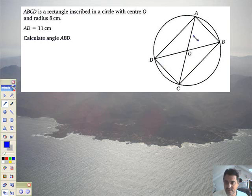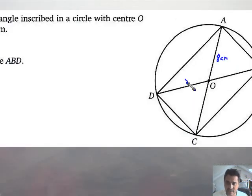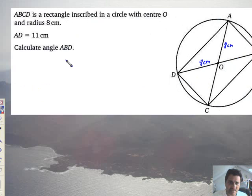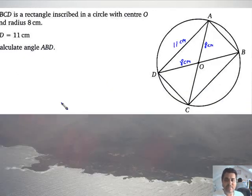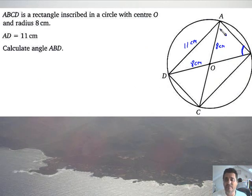So let's just label up then. So that is 8 centimeters. That is also 8 centimeters. And I'm told that AD is 11 centimeters. I've got to calculate angle ABD. I want that. Well, looks very difficult. I've got an 8 there and 8 there. Even if I was to drop a perpendicular straight down, I don't have enough information to calculate AB at all. So I'm going to have to work with what I've got.